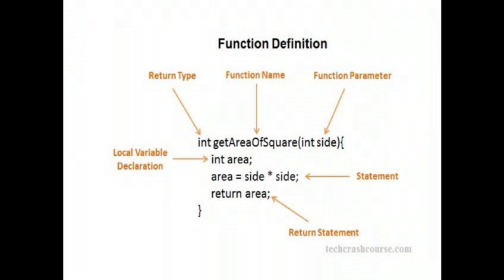Open curly brace. This is the local variable declaration: int area. Then the statement is area equals side times side, then return area.